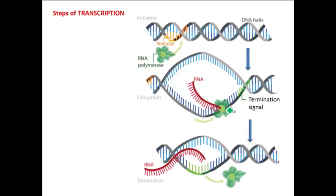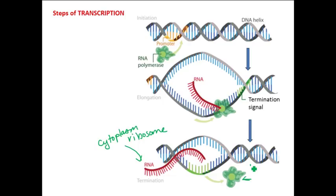When RNA polymerase gets to the termination signal, it drops off the DNA and releases the mRNA. The DNA automatically closes back up. The mRNA is then going to go out into the cytoplasm where it's going to hook up with a ribosome and be read and made into a protein. RNA polymerase is just an enzyme whose whole job is to read genes and make mRNA — once it's done with one, it just goes and finds another promoter to bind to and goes again.